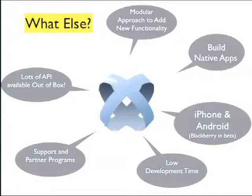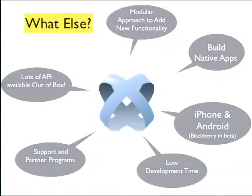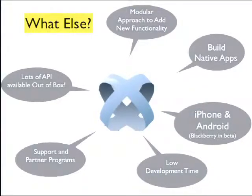Titanium has a modular approach to add new functionality to your existing framework. It's open source, so you can fork it and customize it according to your needs. There are lots of available APIs out of the box — like Social Networking API, YQL API, and many others. It supports iPhone and Android out of the box. BlackBerry is still in beta. The best part is low development time, which reduces the cost. It's scalable — you build it once and scale it to another level. You're maintaining just one code base for everything, and that makes it very powerful.